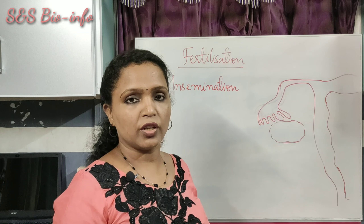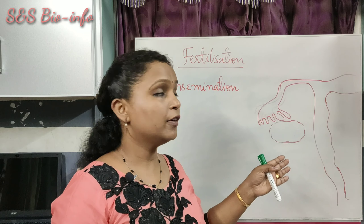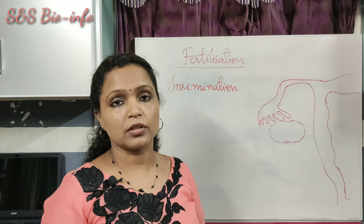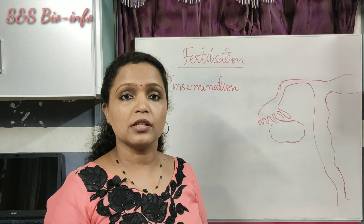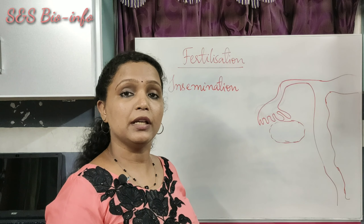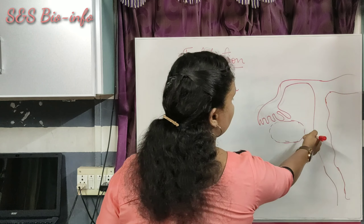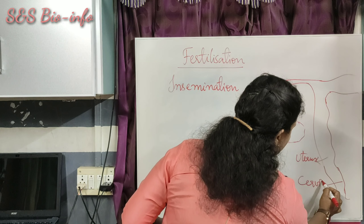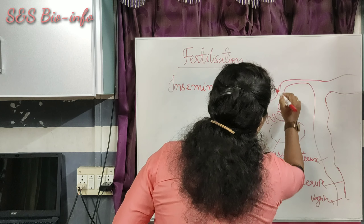After insemination, the sperms will reach the site of fertilization through different parts of the female reproductive system. Human males are able to produce about 200 to 300 million sperms during one ejaculation, meaning the semen contains about that many sperms. This is the half portion of the female reproductive system — here you can see the uterus, then the cervical part, then the vagina, then the ovary, and the fallopian tube.